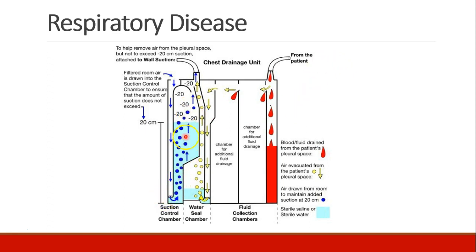There is a suction control chamber that makes sure we don't have more than negative 20 centimeters of water, because we don't want to cause injury with very high suction in the space. At some point we can clamp the tube off and see if suction is maintained or if we lose our vacuum because there's still an air leak — this is what people mean when they talk about clamping off a chest tube. What we want to see is whether the lung has repaired its hole or is still getting air into the pleural space. Once the patient no longer has an air leak, then you're ready to pull out the chest tube and close the space in their chest wall, and hopefully the patient has recovered.